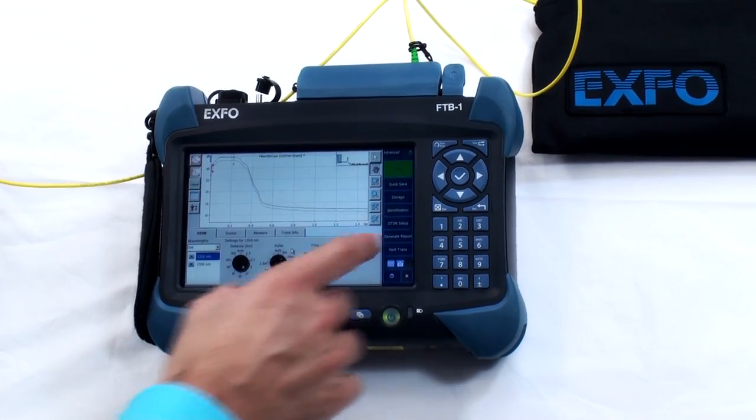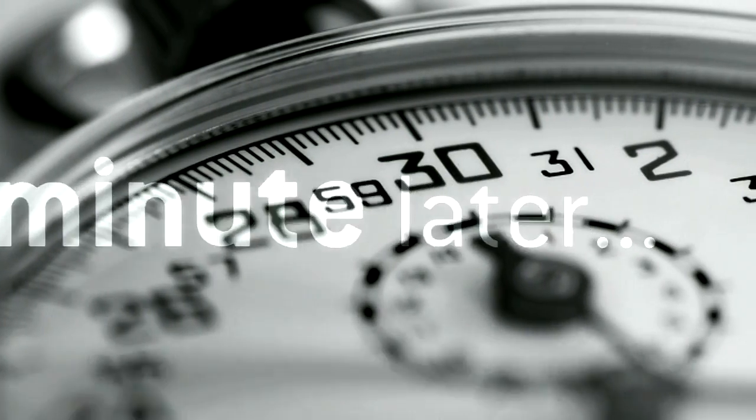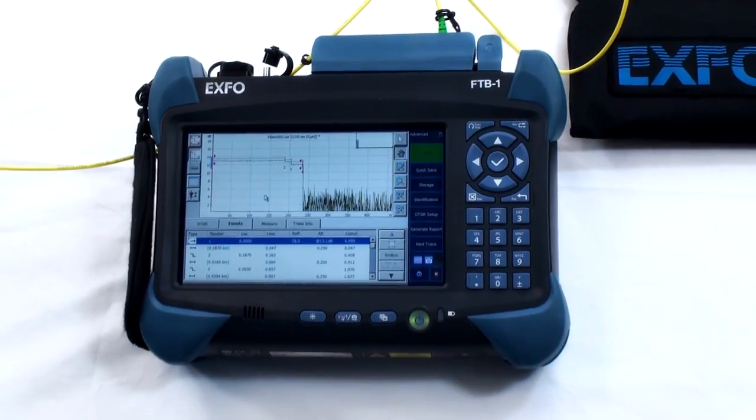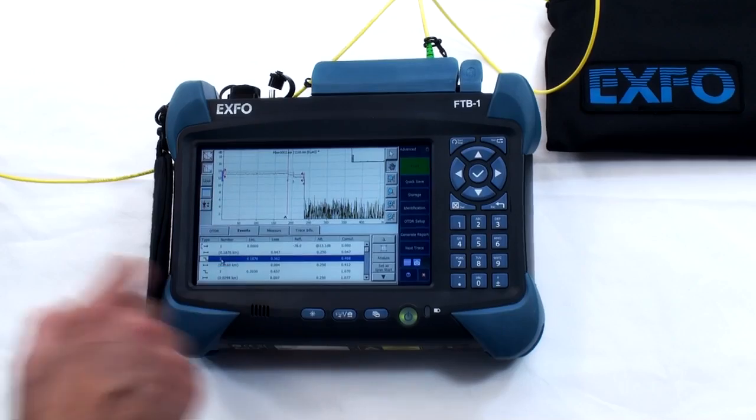So I will change the settings and use a 5 ns pulse width. When the test is complete, now I must analyze the trace, make sure that the events up to the splitter are within tolerances.